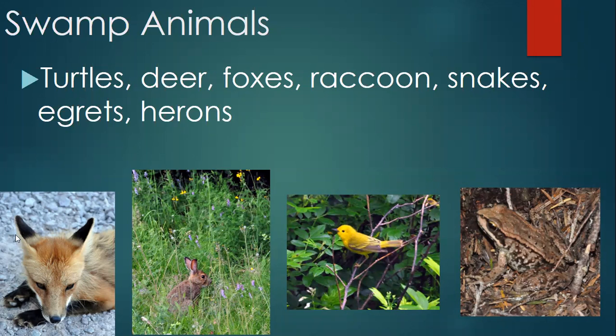Swamps all over the nation have very similar characteristics — it's just the exact tree species or understory species that changes. Here are some animals that live in swamps: the beautiful red fox, the American rabbit, and the goldfinch.